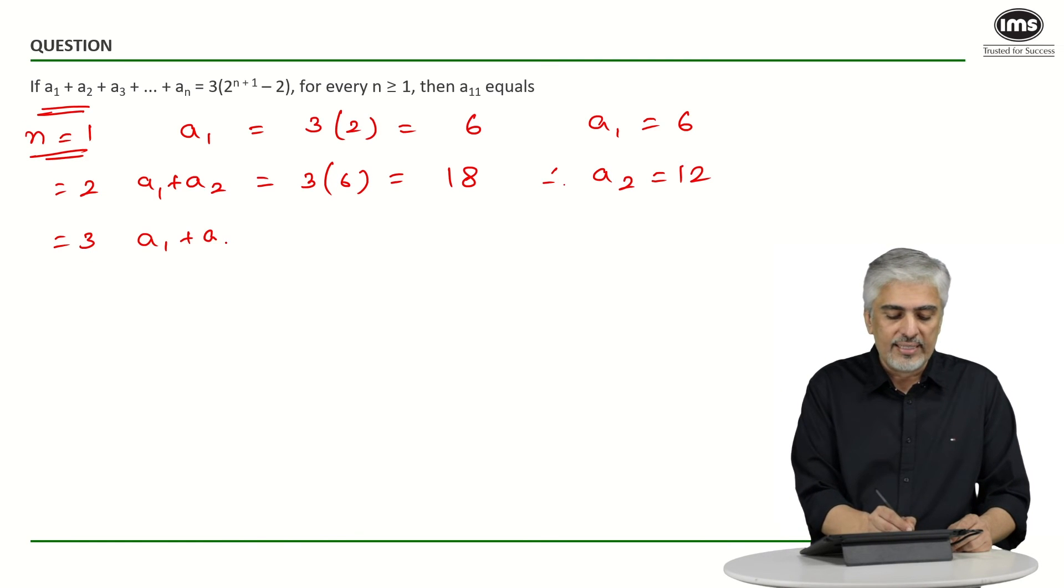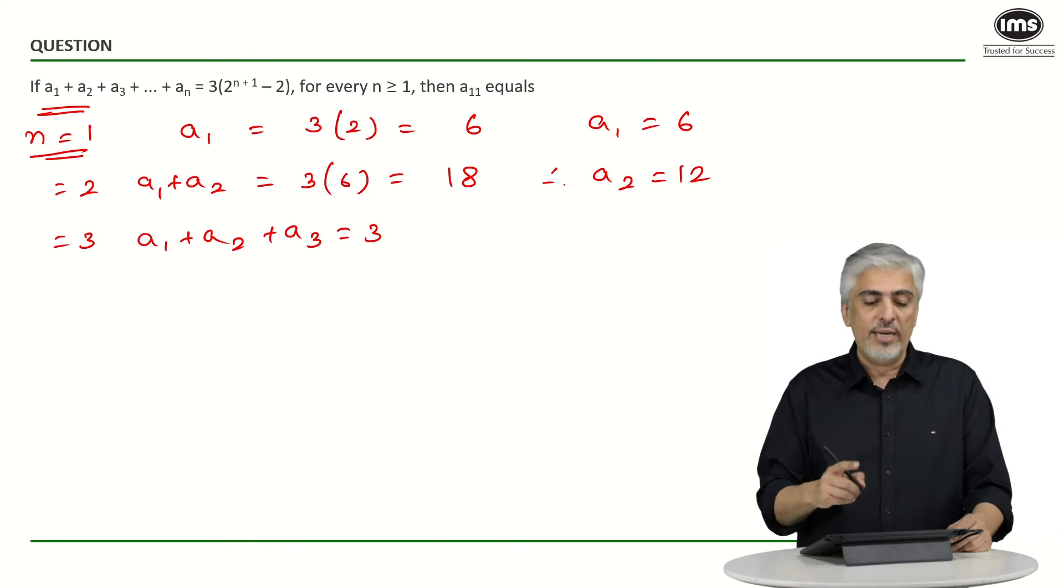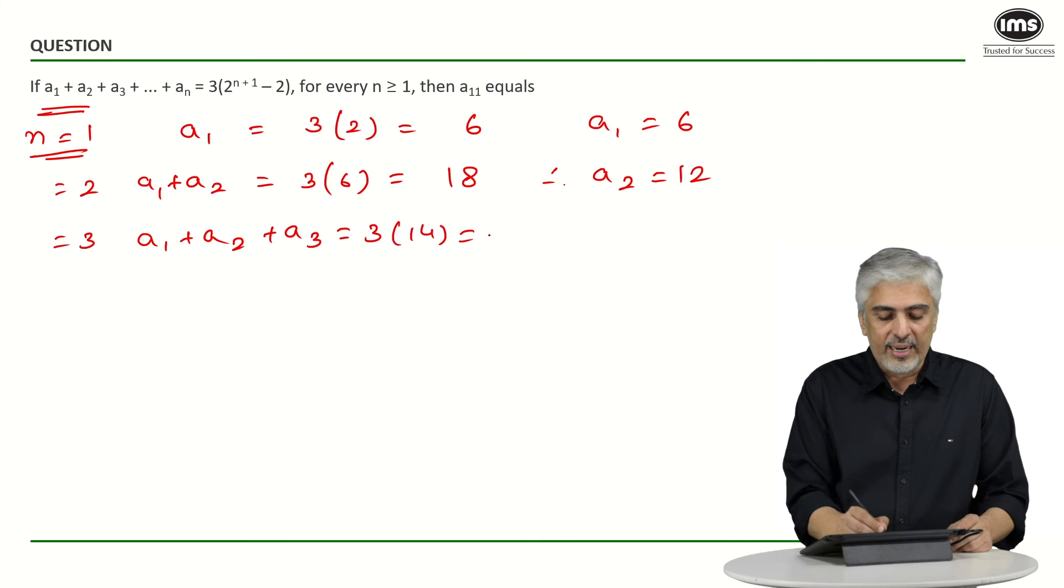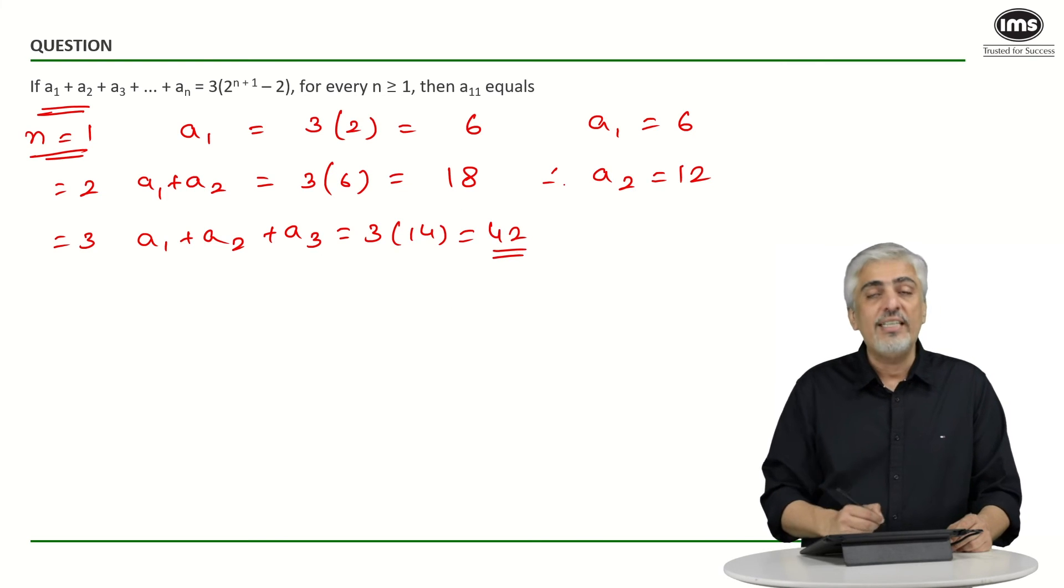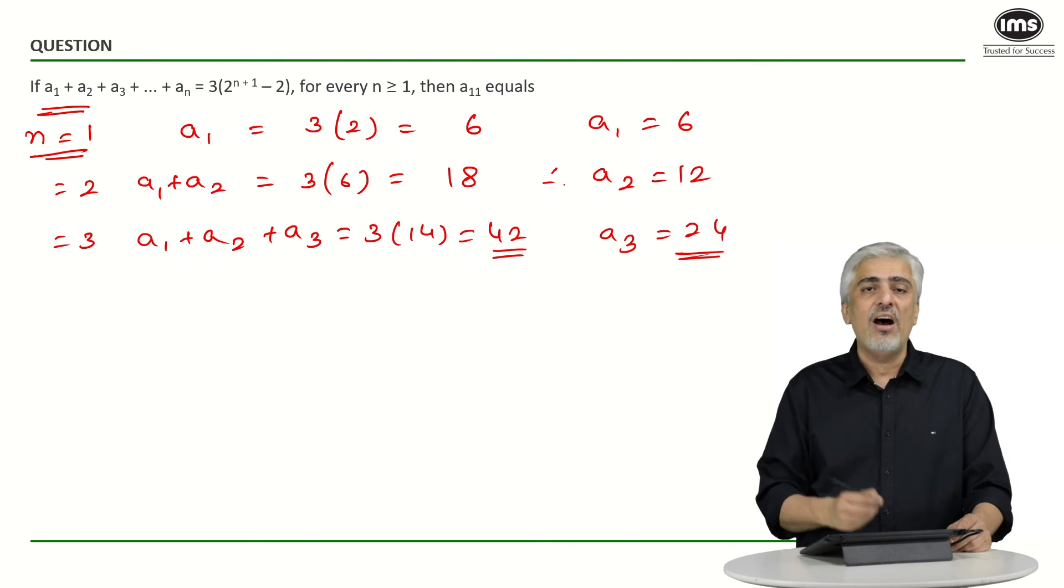Let's do one more time and see what we get by putting n as 3. So I will get a₁ + a₂ + a₃ will be 3 into how much? It will be 2 raise to 3 plus 1, 4. 2 raise to 4 is 16. 16 minus 2 is 14 and I get 42 over here. 42 minus 18 will be 24 and I can clearly see that this is doubling every time.